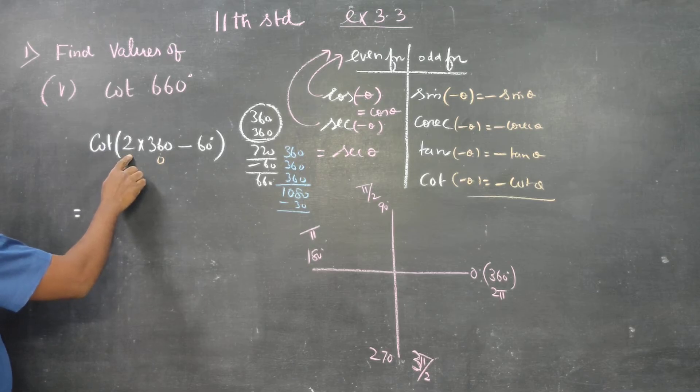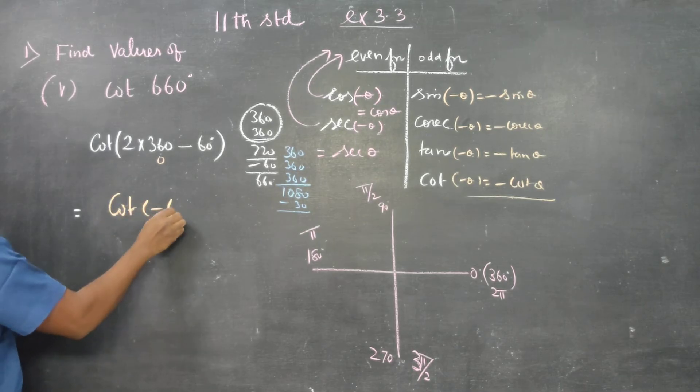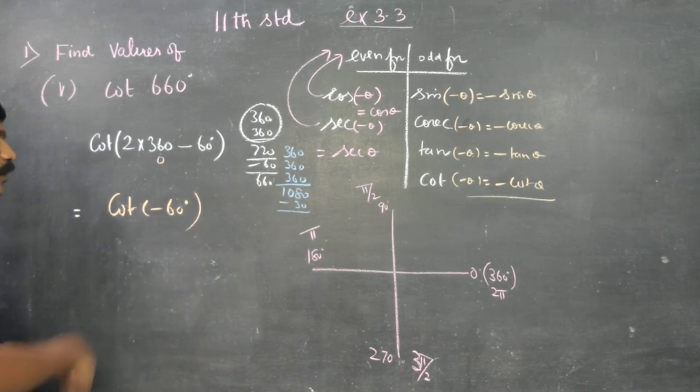0 into 2 is 0. 0 minus 60 is minus 60. Cot of minus 60, cot of minus 60.